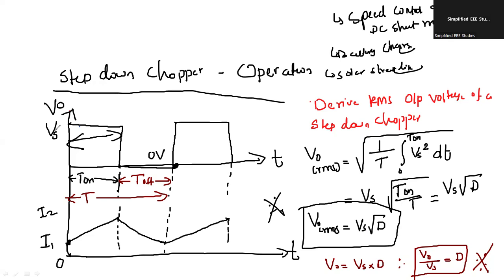In this session, I discussed the meaning of step-down chopper, how it operates, the circuit diagram, and the necessary waveforms. I derived the relation between output voltage and input voltage of step-down chopper, and the expression for RMS output voltage. In the coming session, I am going to discuss a numerical example solved manually as well as using MATLAB.